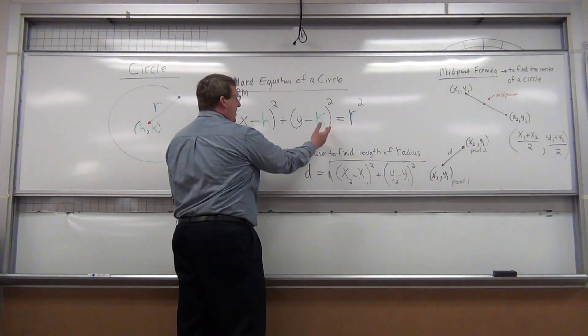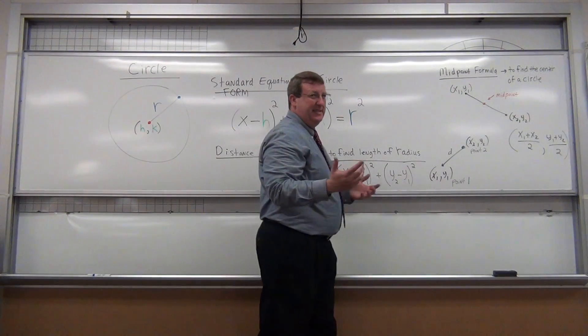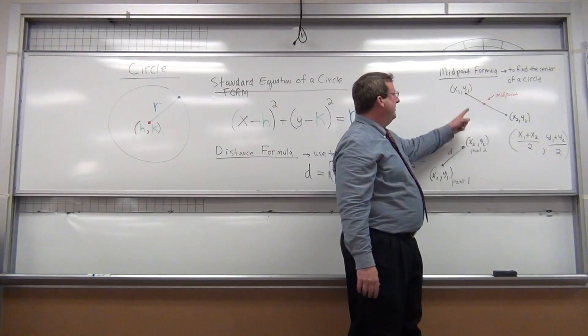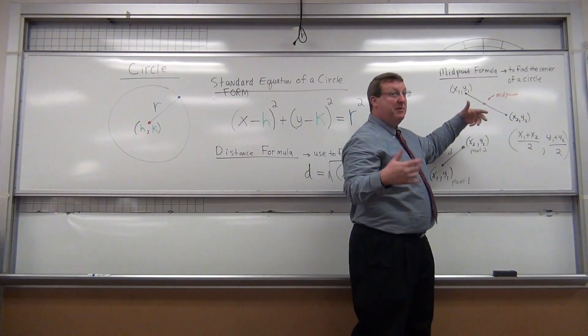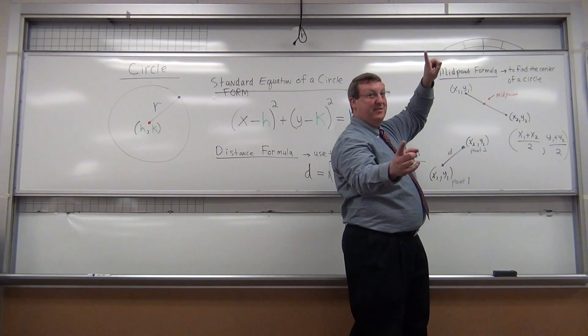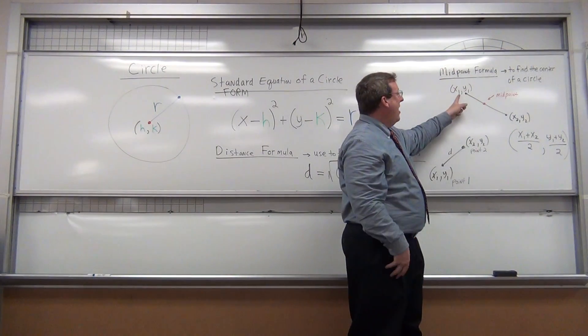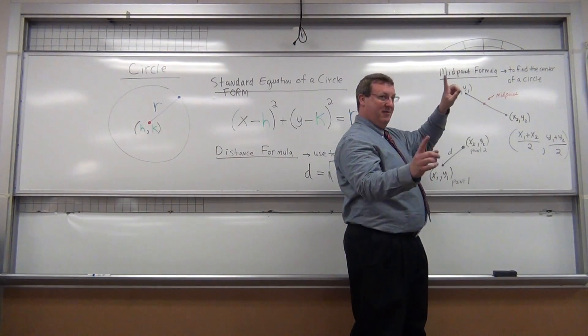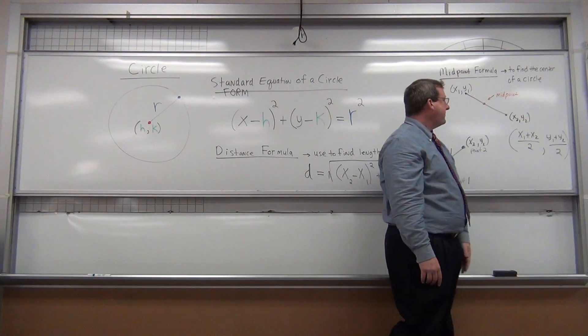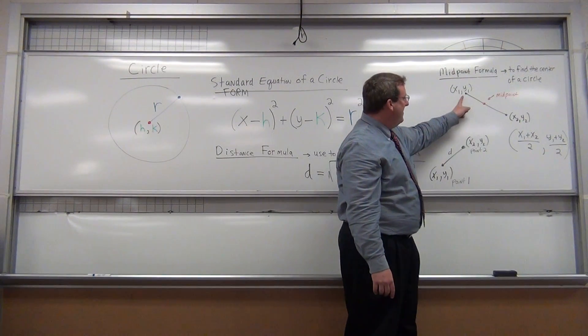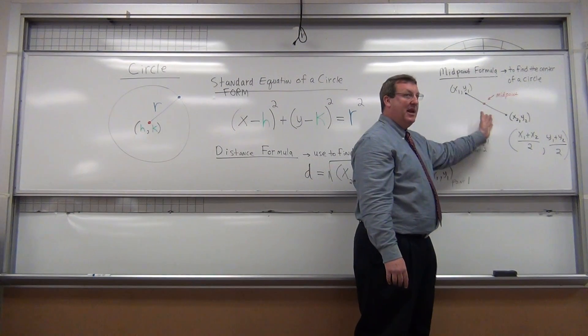Well, in addition to finding the radius, how do we find the center of a circle? Well, a lot of times if you have two points, and the question I'm going to give you next, we actually have two points on a circle. Well, how do we find the middle? Well, you have a midpoint formula. It will help you find the center of a circle. So how do you find the midpoint or the halfway point on a line segment?